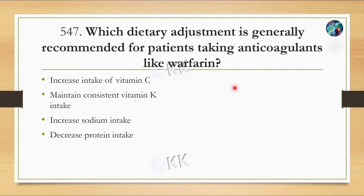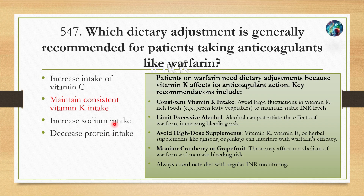Next question: which dietary adjustment is generally recommended for patients taking anticoagulants like warfarin? Option A: increase intake of vitamin C. Option B: maintain consistent vitamin K intake. Option C: increase sodium intake. Option D: decrease protein intake. The correct answer is Option B — maintain consistent vitamin K intake. Vitamin K affects warfarin's anticoagulant action, so consistent vitamin K intake — avoiding large fluctuations from vitamin K-rich foods like green leafy vegetables — is crucial to maintain stable INR levels.